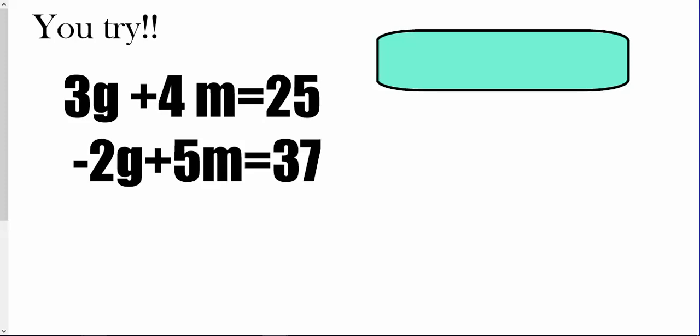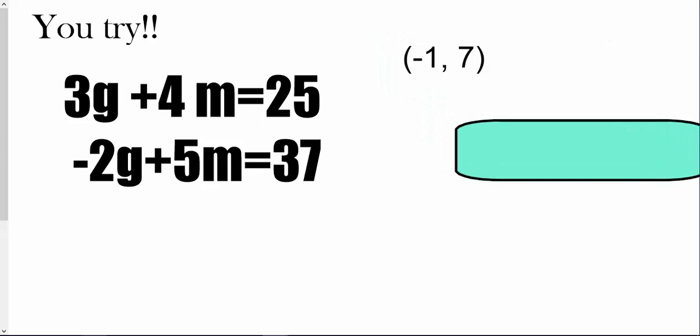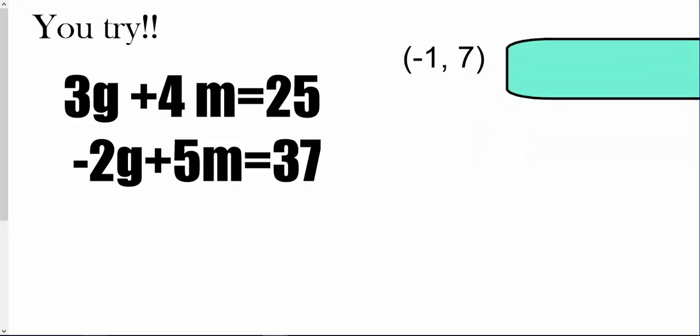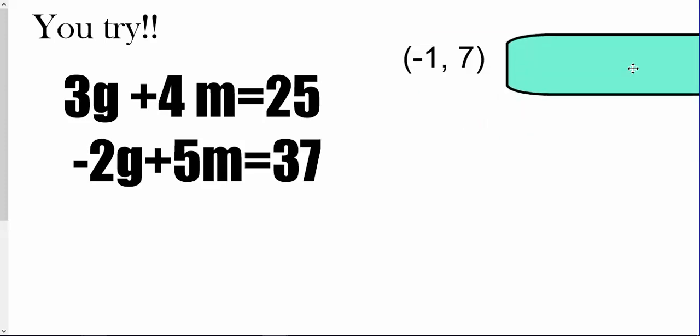You should have gotten negative 1 comma 7 as a solution. If you did, great — move on. If not, stick around and watch the explanation.